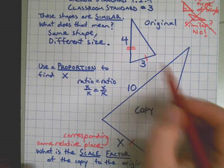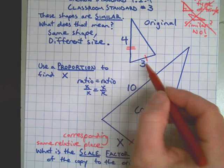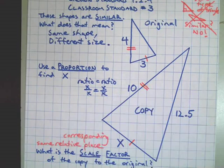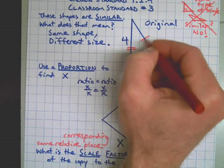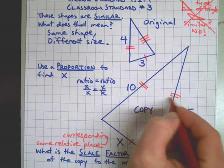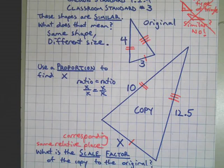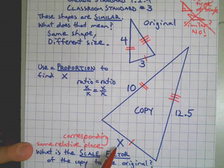So I can see that the four is over to the left and around the corner of the three, just like the ten is down here. And then that leaves this unlabeled side corresponds with the twelve and a half. So I've got all my corresponding sides labeled.